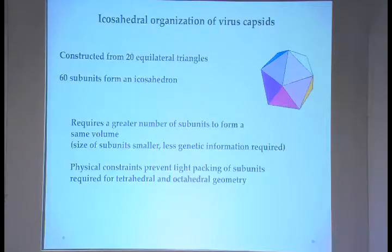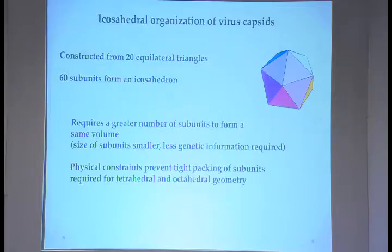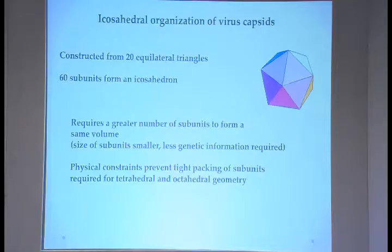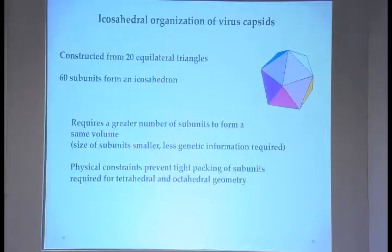To rationalize genetic information versus number of proteins: the virus tries to minimize genetic information. If you have smaller subunits, less genetic information is required. This also means fewer chances of mutations. This requires a greater number of subunits of smaller size to form the same volume, making the icosahedron very stable and essential for protecting the genome.